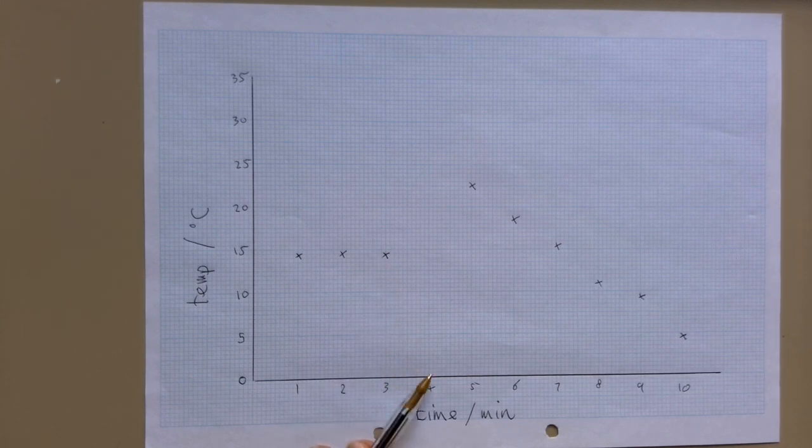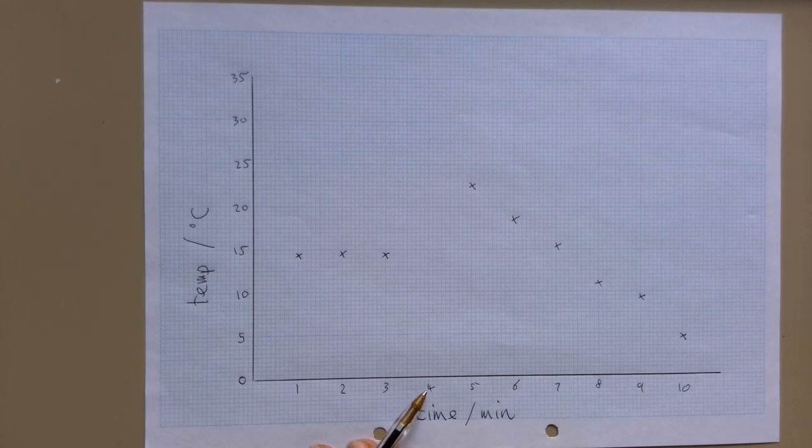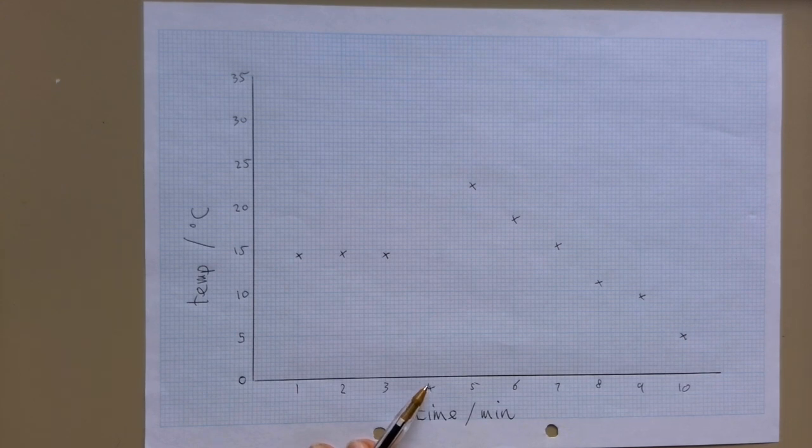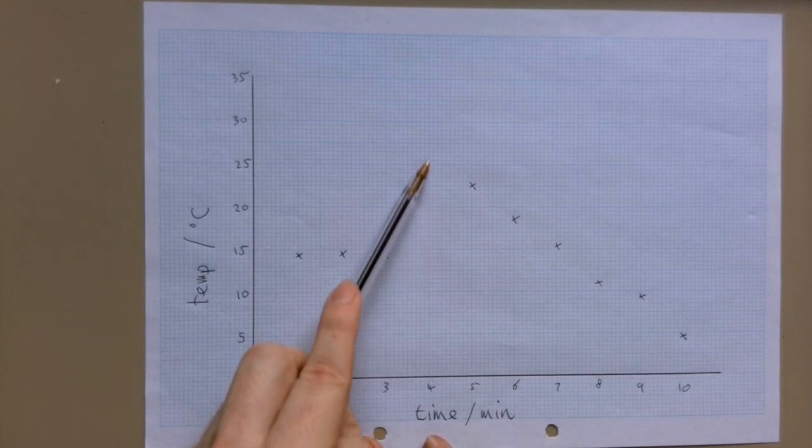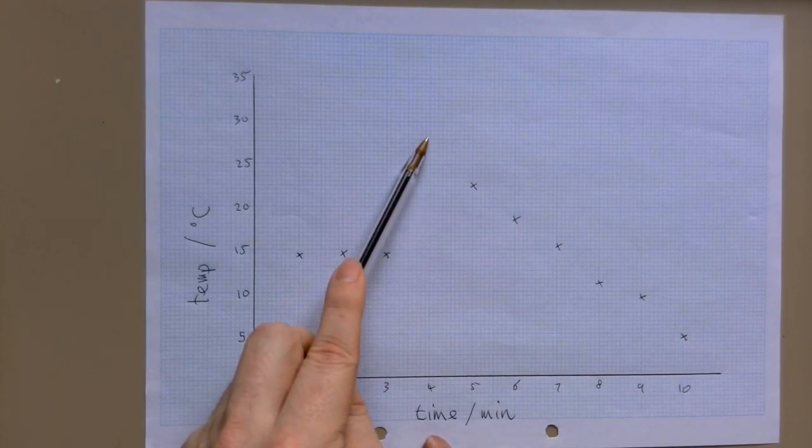At the fourth minute, well it doesn't have to be exactly the fourth minute, in my example at the fourth minute I have not recorded a temperature. Instead, I have added the other chemical, so in my example the HCl. And I'm just going to allow those to react. And as they react, the temperature will increase, because neutralization is exothermic.